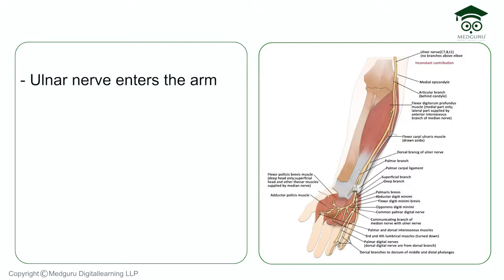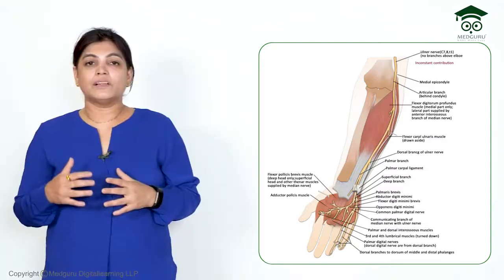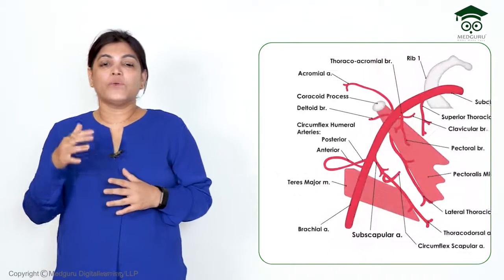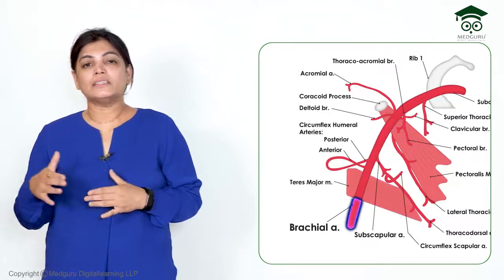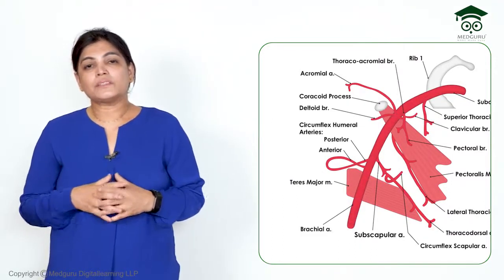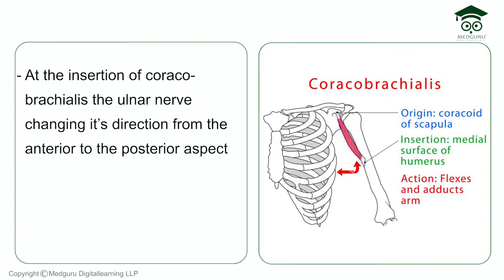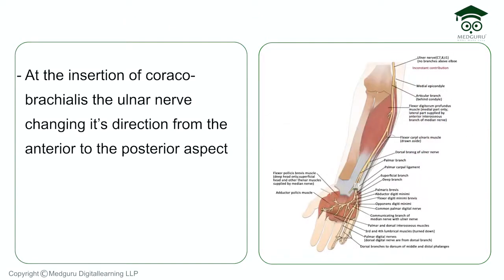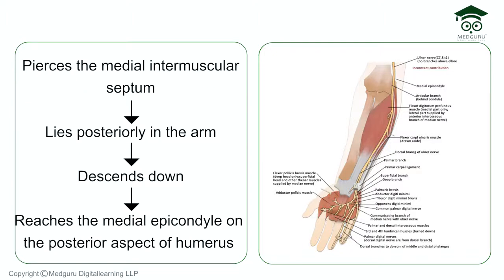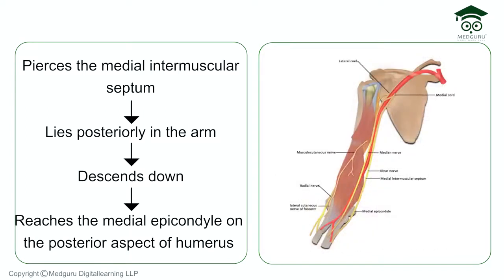The ulnar nerve then comes into the arm and lies medial to the brachial artery. At the middle part of the humerus — specifically at the level of insertion of the coracobrachialis muscle — the ulnar nerve changes its direction. It moves from the anterior aspect of the arm to the posterior aspect by piercing the medial intermuscular septum.